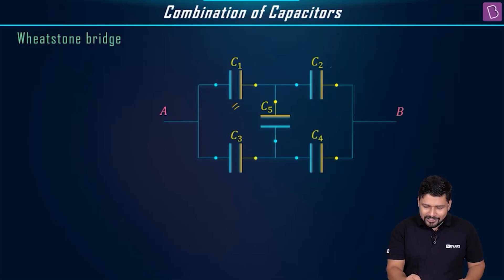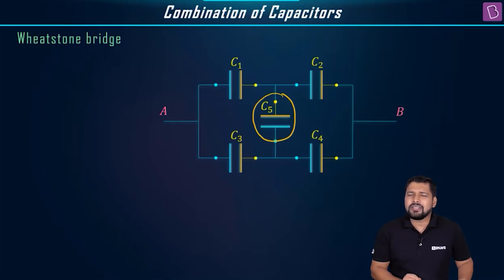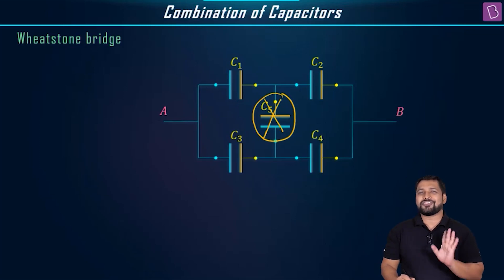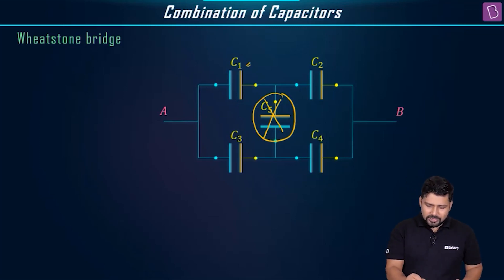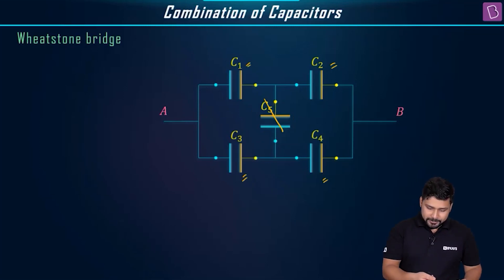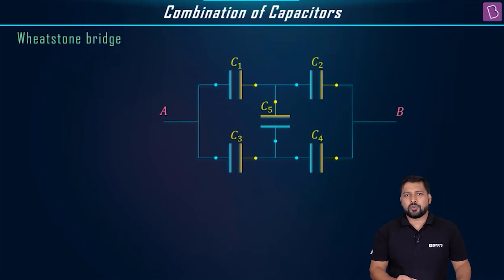You cannot say that C1 and C2 are in series, because this one comes in the middle — they're not in series, neither in parallel. Had this C5 not been there, if this was absent, then this would have been a simple question: C1 and C2 are in series, C3 and C4 are in series, and together they are parallel to each other. But how will you ignore this C5? And here comes the Wheatstone bridge to our rescue.